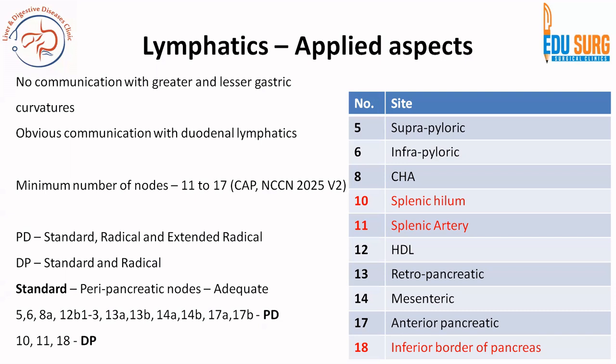Station 5 and 6 are supra and infrapyloric. Station 13 is retropancreatic, whereas 17 is anterior pancreatic. You will have to revise these lymph node stations many times, but once you start doing these surgeries and dissecting these areas, the numbers will become very easy to remember. We are not going into discussion of radical and extended radical because it is not the standard of care currently.